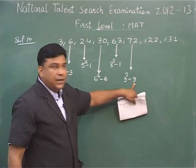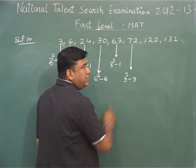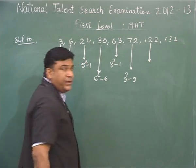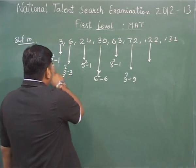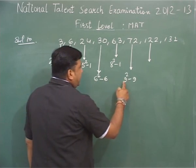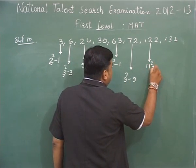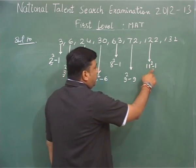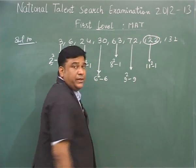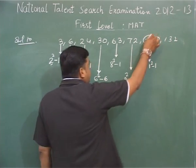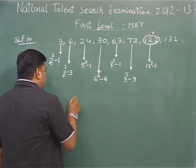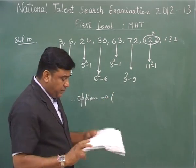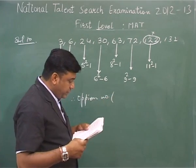9 squared is 81; 81 minus 9 equals 72. For the next number 122, we move through the pattern: 2, 3, then 5, 6, then 8, 9, then 11. So 11 squared minus 1 gives 121 minus 1, but the number given is 122. It means this number is the wrong term — it should be 121. Therefore, looking at the paper, 122 is option number 3, and this is the answer.